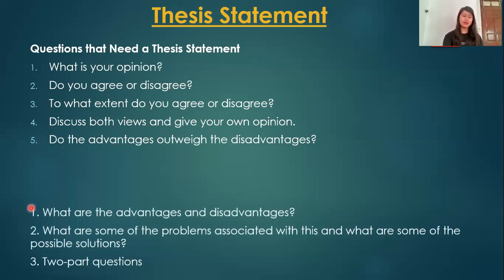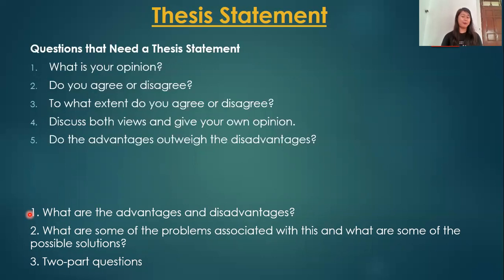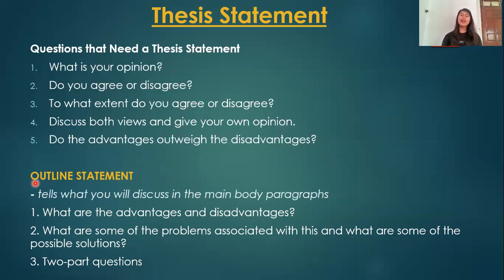For other question types — such as 'what are the advantages and disadvantages,' 'what are some of the problems associated with this and what are some possible solutions,' and two-part questions — you don't need to give an opinion. Instead, you still write a paraphrase of the given topic plus an outline statement. An outline statement tells the examiner what you will discuss in the main body paragraphs — it is a brief answer to the given question.